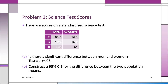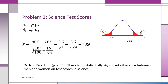Problem two compares men and women on a standardized science test to see if there is a significant difference. We sampled 100 men with a mean of 80 and standard deviation of 10, and women with a mean of 76.5 and standard deviation of 16. We want to know if the difference is significant at alpha = 0.05. H0: mu1 = mu2; H1: mu1 ≠ mu2. Using a two-tailed test, we cut alpha in half — 0.025 in each tail — giving critical values of ±1.96.